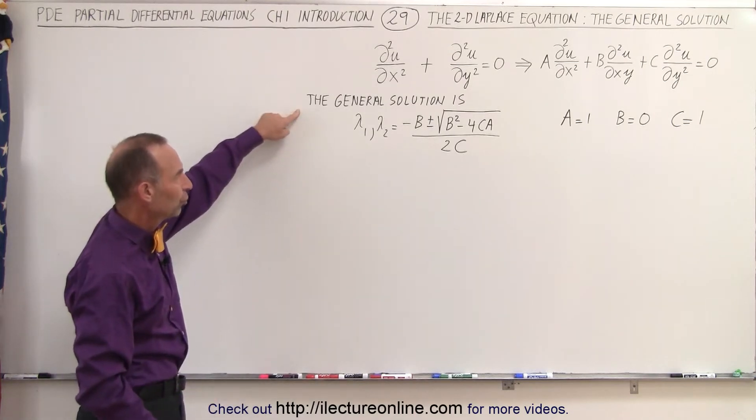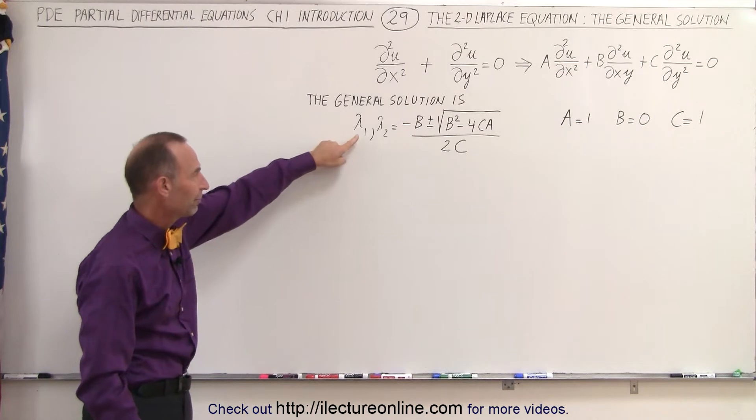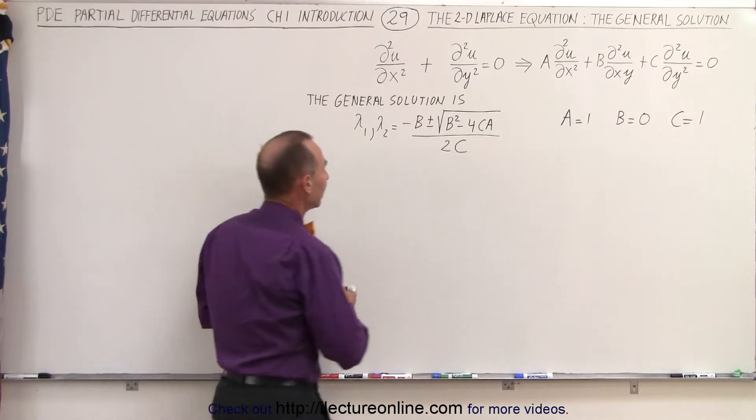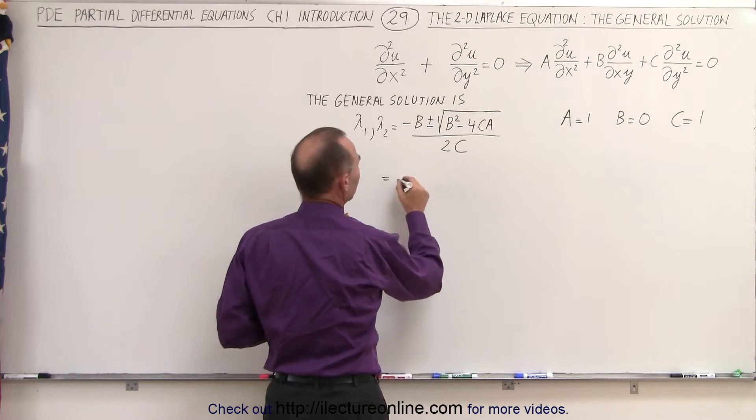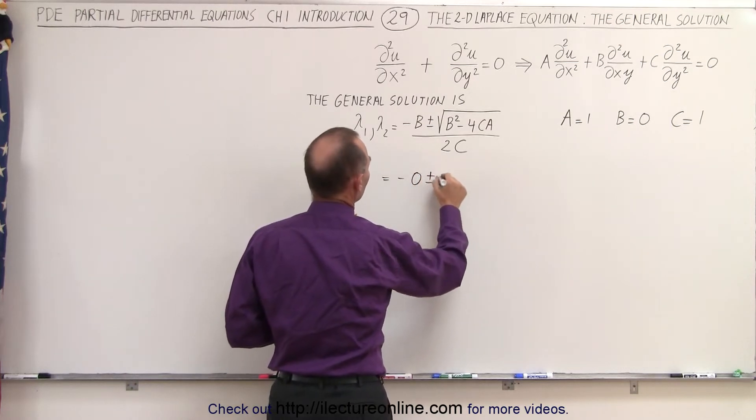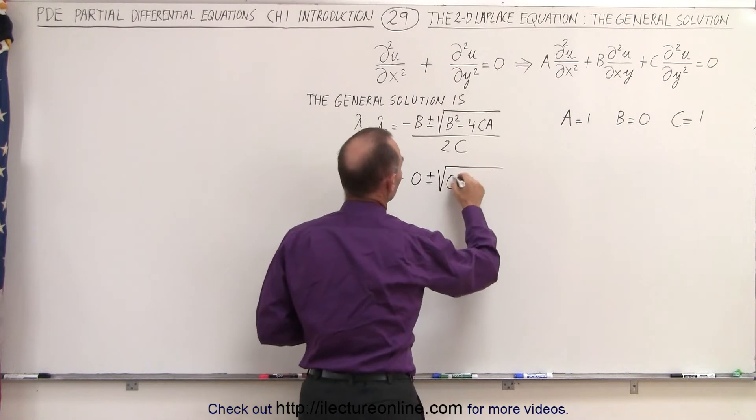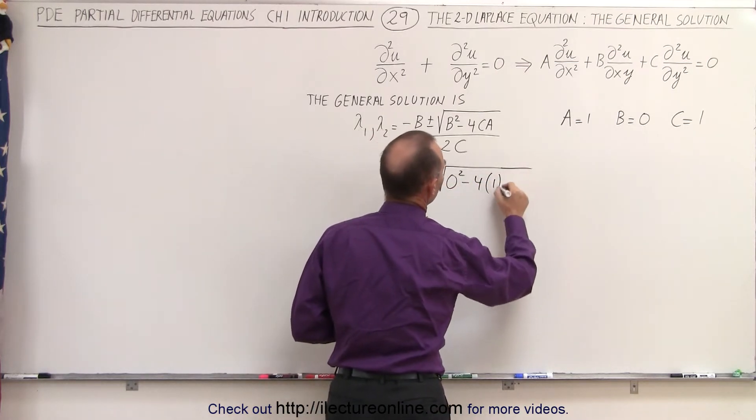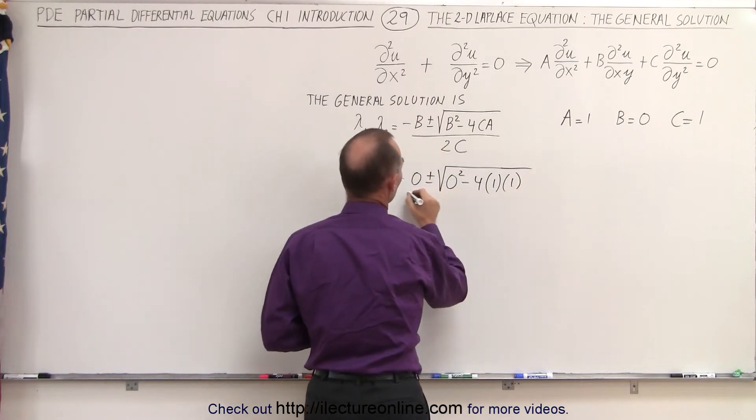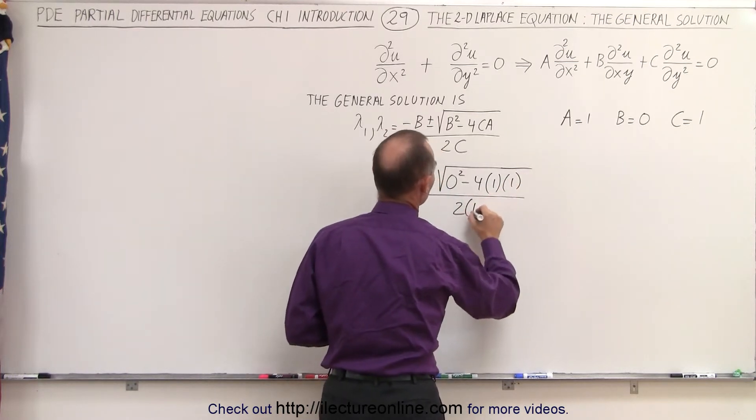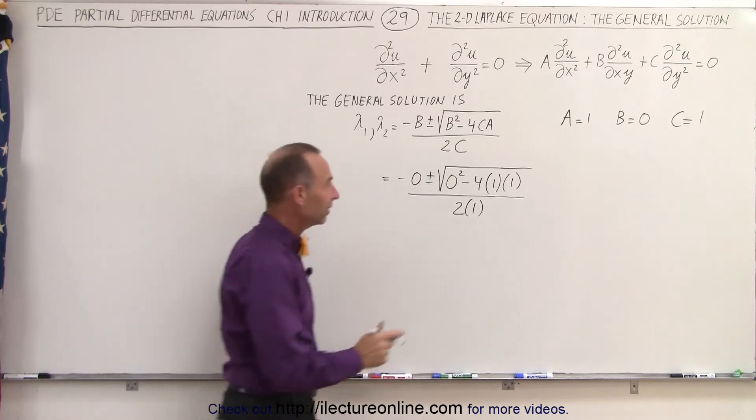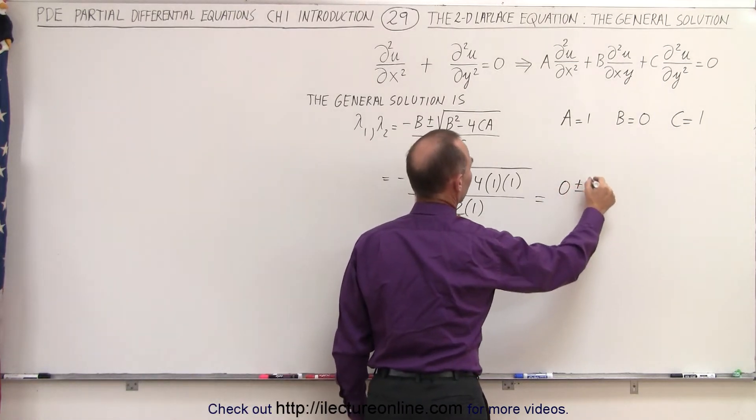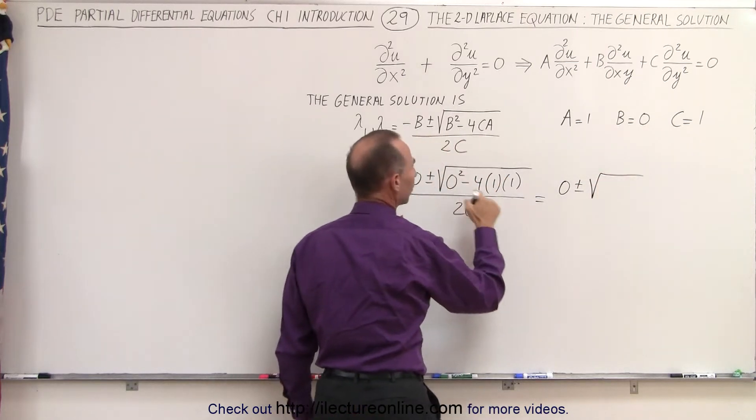The general solution to that would be equal to this, so we have to find lambda 1 and lambda 2 by solving the quadratic equation. Therefore, we can say that this is equal to minus 0 plus or minus the square root of 0 squared minus 4 times c, which is 1, times a, which is 1, all divided by 2 times c, which is 1. And of course, we have to simplify that.